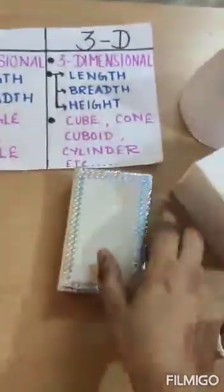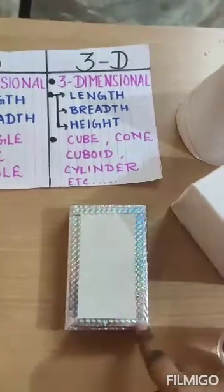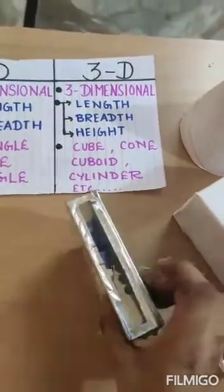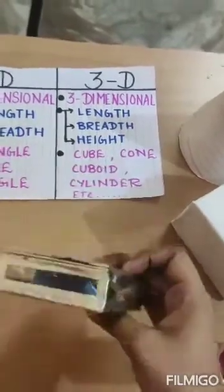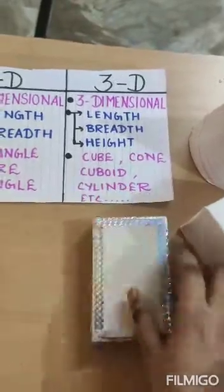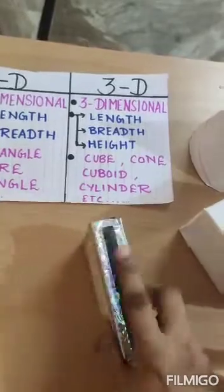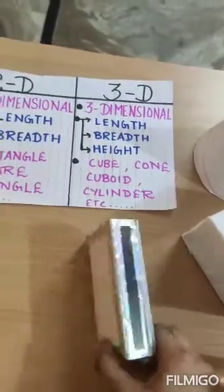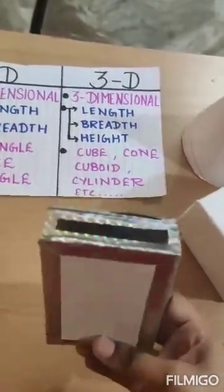As we can see in this box — if we see one face, it is 2D because it has length and breadth. But if we see its thickness, while seeing its thickness and the whole object, it's having three dimensions: length, breadth, and its thickness which is its height. So it's a three-dimensional object, and this object has the shape of a cuboid.